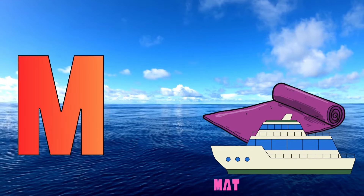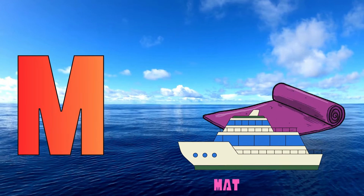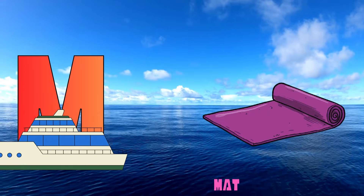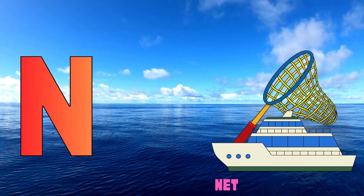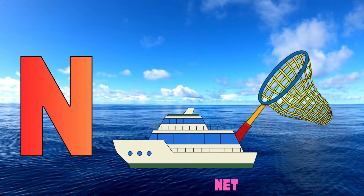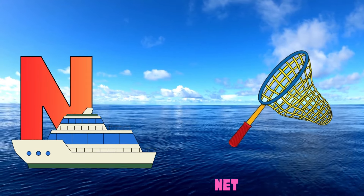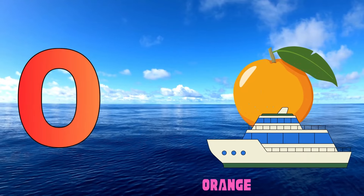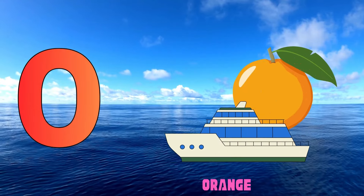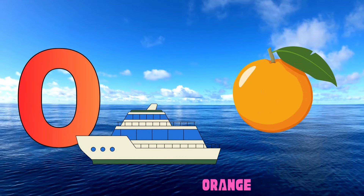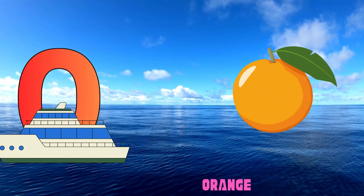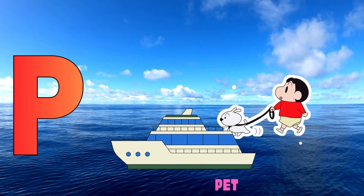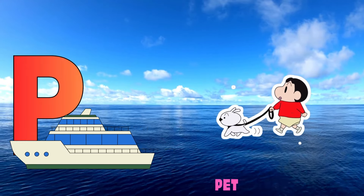M is for mat, m-m-mat. N is for net, n-n-net. O is for orange, o-o-orange. P is for pet, p-p-pet.